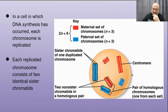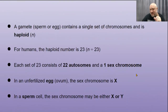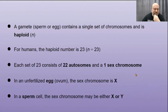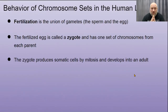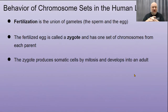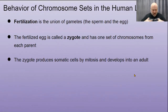A gamete — a sperm or egg — contains just a single set of chromosomes and is haploid, or n. For humans the haploid number is 23: 22 autosomes and one sex chromosome. In an unfertilized egg the sex chromosome is always an X, so females only pass on X chromosomes. Males have a 50/50 chance of passing on an X or a Y. When egg and sperm with 23 chromosomes each come together at fertilization, we get back up to the diploid number of 46 — forming a zygote.